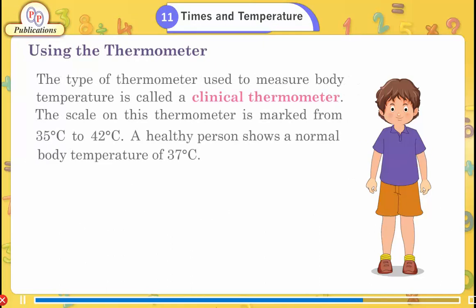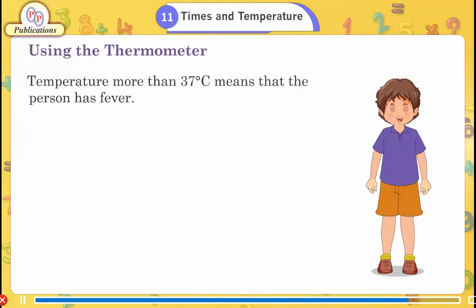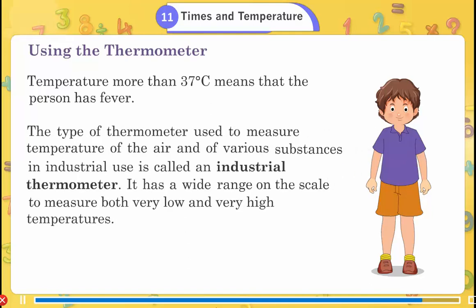Using the Thermometer. A clinical thermometer measures body temperature, with a scale from 35°C to 42°C. A healthy person's normal body temperature is 37°C. An industrial thermometer measures the temperature of air and various substances, with a wide range to cover both very low and very high temperatures.